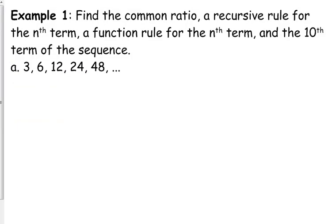Let's go to an example. Let's find the common ratio, the recursive rule, function rule, and the tenth term of the sequence. If we are looking at 3, 6, 12, 24, 48, what are we multiplying by? 2. So our common ratio is positive 2. Sometimes your common ratio can be negative, just like the common difference can be negative.